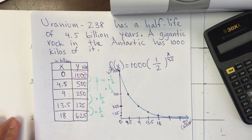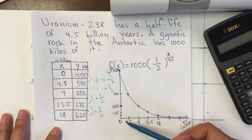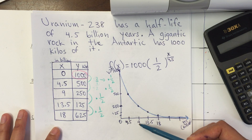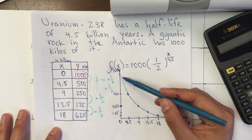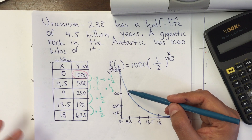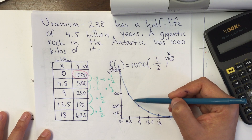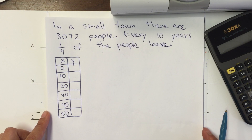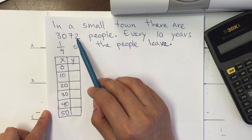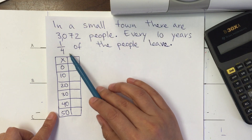A student asked: what happens if I want a value not at 4.5 or 9 billion years? That's something we'll look at later — how do you figure out other points? We'll come back to that. Now, in a small town there are 3,072 people and every 10 years one-fourth of the people leave.